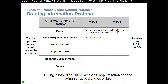RIPv1 broadcasts updates to 255.255.255.255, while RIPv2 multicasts updates to 224.0.0.9. RIPv1 does not support VLSM (variable-length subnet mask) because it doesn't send the subnet mask within the update, while RIPv2 does send the subnet mask. Classless interdomain routing is not supported in version 1 but is supported in version 2. Summarization is not supported in RIPv1 but is supported in RIPv2, as is authentication. Pretty much any exam questions will revolve around this slide — UDP port number, update interval, and so on.